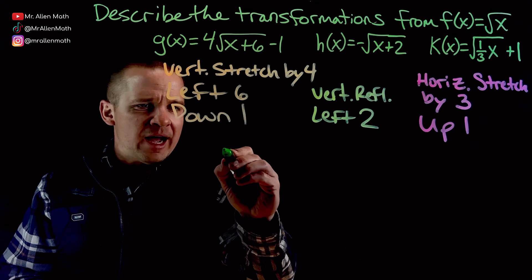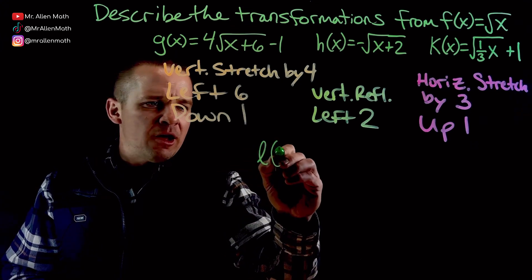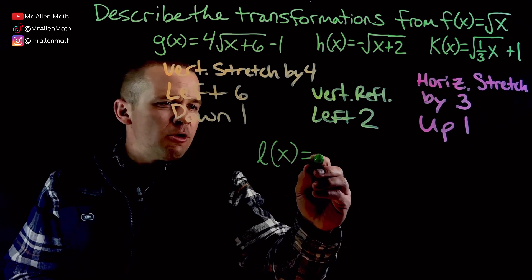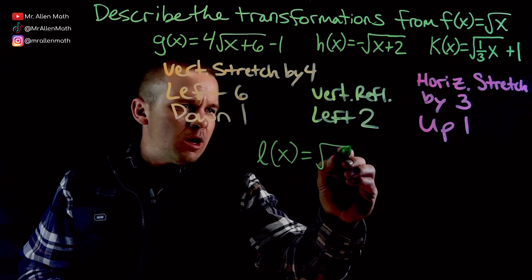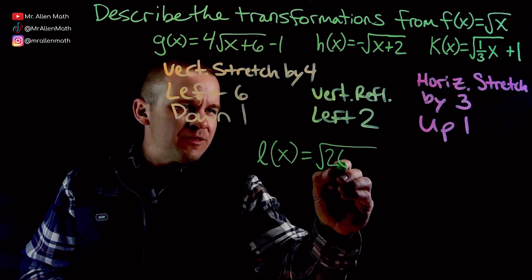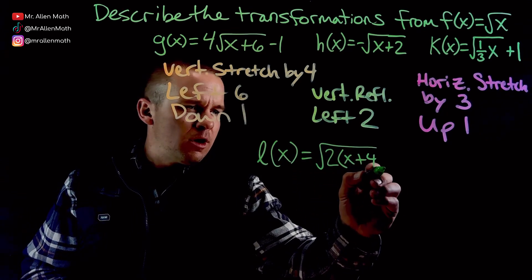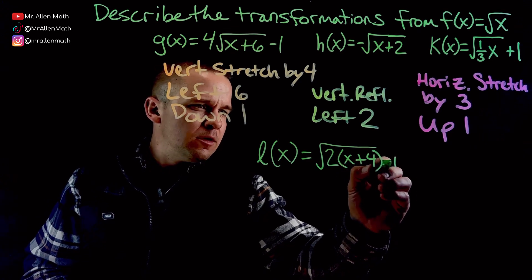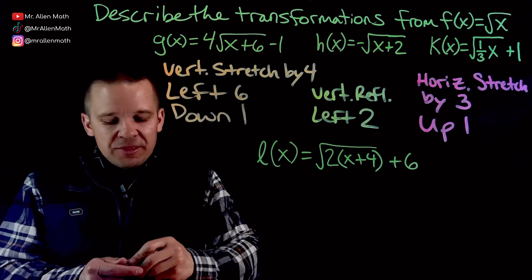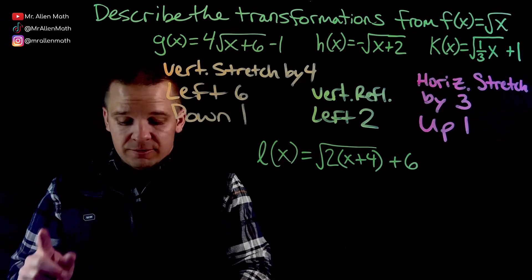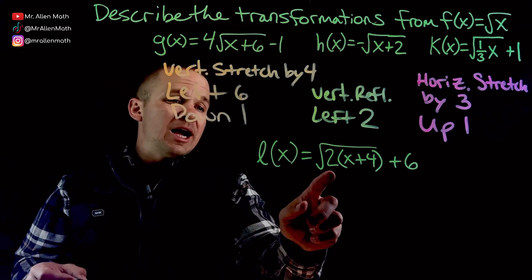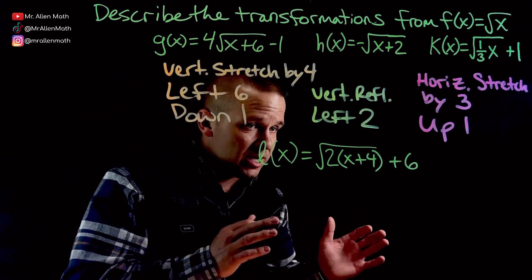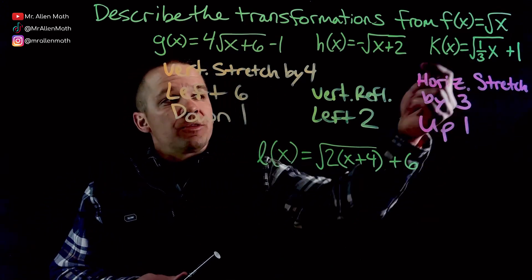Let's go with L of x. I had to sing the alphabet in my head for a sec right there. So let's say we have the square root of 2 parentheses x plus 4, and then we'll go with plus 6. So let's talk about these transformations here. First off, I got that 2 inside the square root.